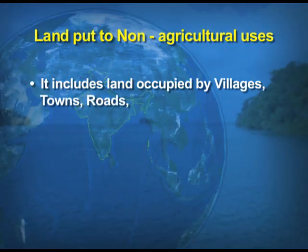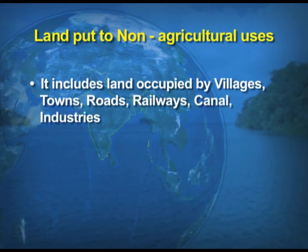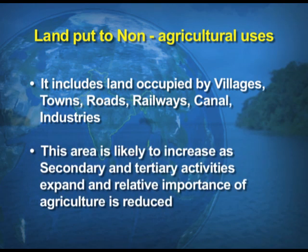The area besides agricultural land — where we are growing crops — and all other uses are non-agricultural uses. For example, villages, towns, roads, railways, or industries are all under non-agricultural uses. This area is likely to increase as secondary and tertiary activities expand and the relative importance of agriculture is reduced, because in India the trend shows people are shifting from rural to urban areas in search of better employment opportunities, shifting from agricultural to non-agricultural activities, known as secondary or tertiary activities.